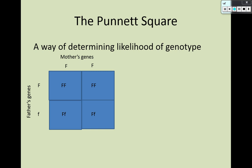There are technically four offspring represented here. That doesn't mean this couple would have four children, but this gives us the likelihood of genotype and phenotype for offspring. Two squares are heterozygous and two are homozygous dominant. So any child this couple has has a 50% chance of being homozygous dominant, a 50% chance of being heterozygous, and yet a 100% chance of having the dominant phenotype, because in both cases the child carries the dominant allele.